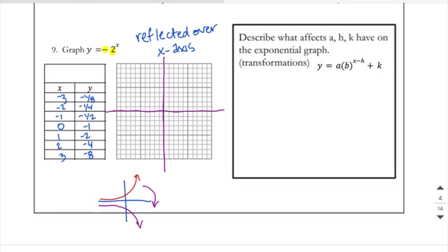Our asymptote is still here because it's not shifted up or down. When we plot our points, we get 0, negative 1; 1, negative 2; 2, negative 4; and 3, negative 8. So this is scooting right along the axis and then shooting down.